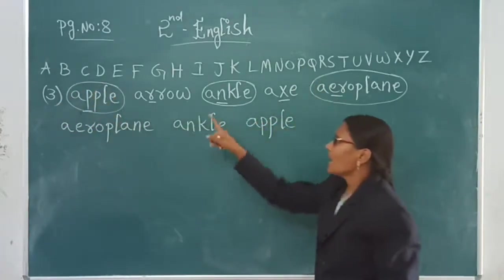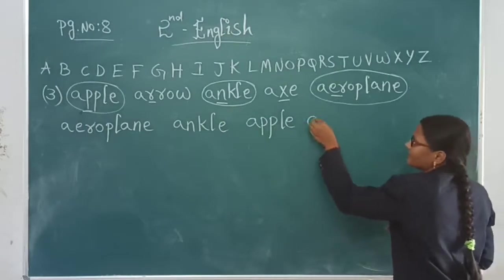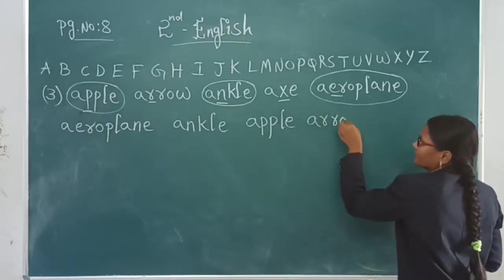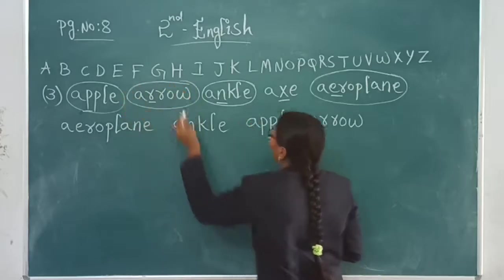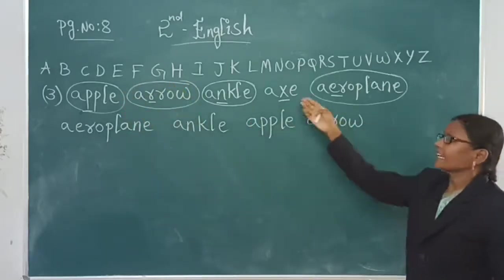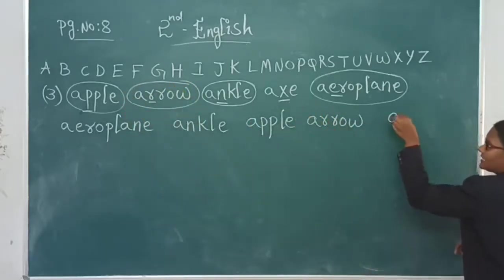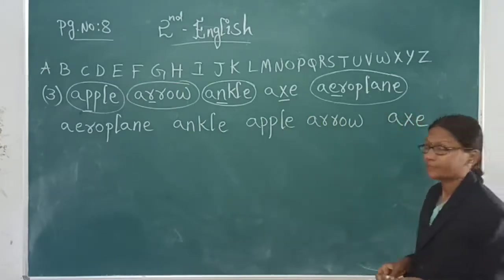Q, R. R is arrow. Arrow. Now circle the arrow. Last one axe. So axe. Like this you have to play.